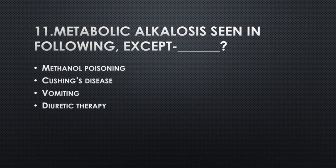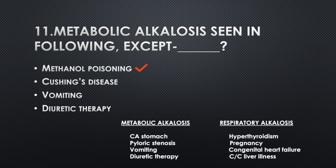Metabolic alkalosis is seen in following conditions except — Option A: Methanol poisoning, Option B: Cushing's disease, Option C: Vomiting, Option D: Diuretic therapy. Answer: Option A, Methanol poisoning. Metabolic alkalosis is seen in: CA stomach, pyloric stenosis, vomiting, and diuretic therapy. Respiratory alkalosis seen in: hyperthyroidism, pregnancy, congestive heart failure, and chronic liver illness.